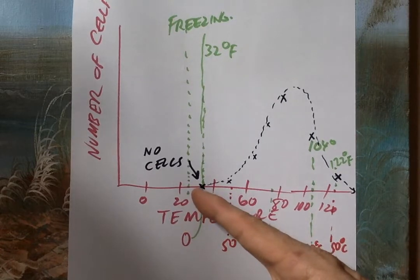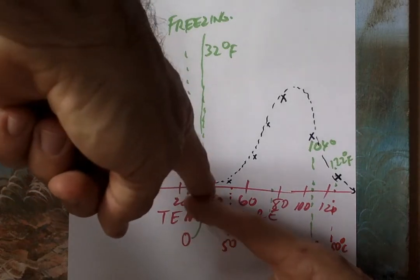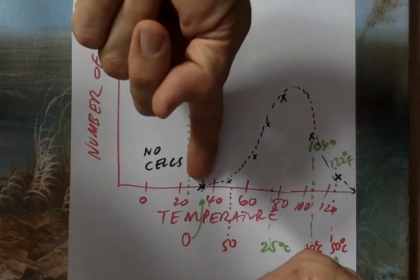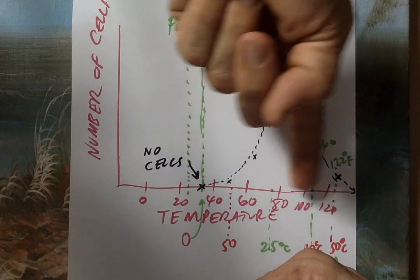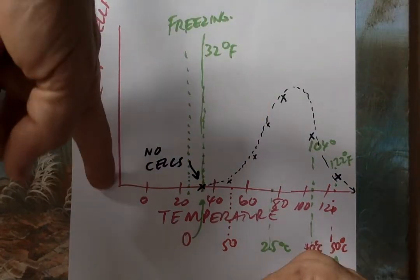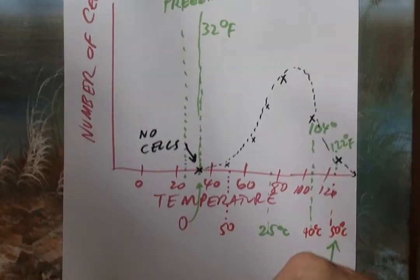So there are no cells growing when it's cold, very cold, freezing here. And this right here is temperature, right across here: 32 degrees, 60 degrees, 80 degrees, 120 degrees, 122. Up here is the number of cells.